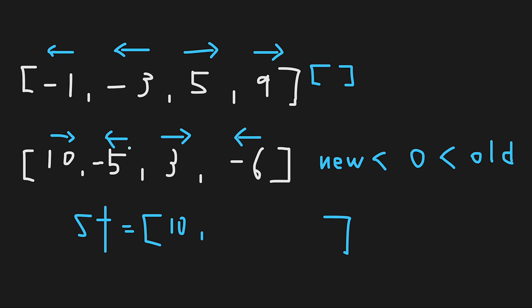Next, we find -5. This is a new asteroid less than zero, and the old asteroid on the stack is 10, which is greater than zero — so we meet the collision condition. We compare: absolute value of -5 is 5, and 10 is greater, so 10 is stronger. We don't add -5 to the stack. Moving on, we find 3. Since 3 is greater than zero, no collision — just add 3 to the stack.